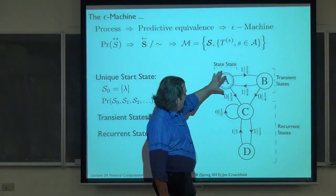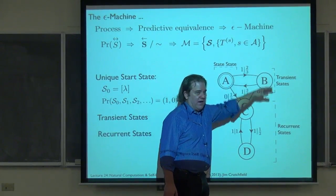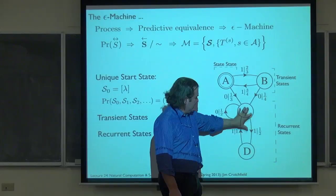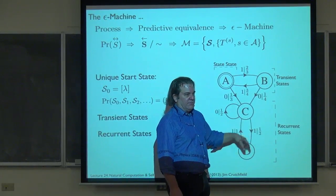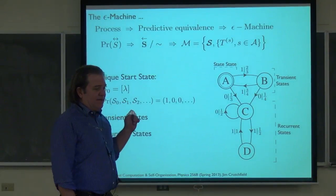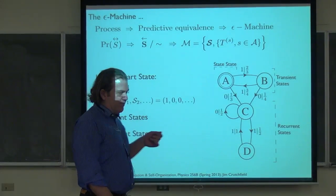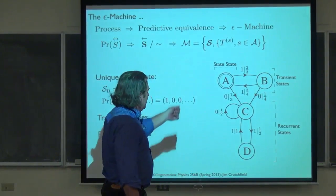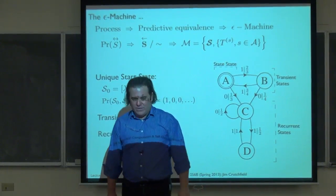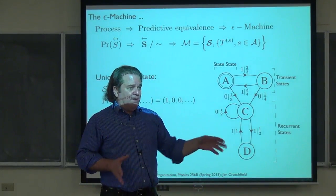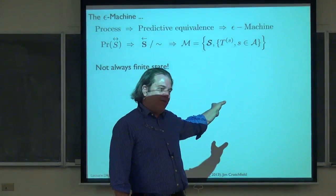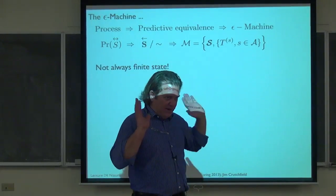In the generic case, we're going to have transient states that we can visit for some period of time, and then we'll make some transition down to a set of recurrent states. Typically there's just one recurrent component, and then we rattle around in the recurrent states asymptotically in time. This picture looks like what we were talking about in the winter quarter in terms of Markov chains and hidden Markov chains. This is a hidden Markov chain — edge-labeled, hidden Markov chain. The mathematics we've introduced is actually much more powerful than this, and it depends on the nature of the process. In particular, things don't have to be finite state.